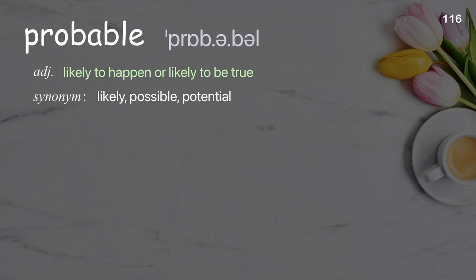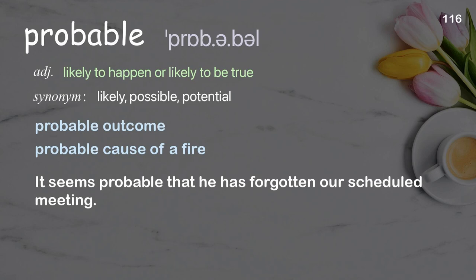Probable: likely to happen or likely to be true. Examples: probable outcome, probable cause of a fire. It seems probable that he has forgotten our scheduled meeting.